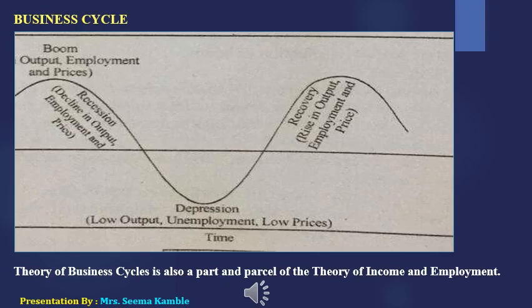But this boom situation is not permanent in the economy. Slowly, recession enters — the economy comes down. In recession, output declines and employment levels and prices are also lower. If the recession continues for a long time period, the economy enters depression — a situation of low output, unemployment, and lower prices.